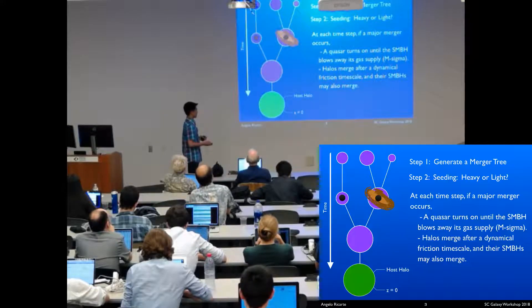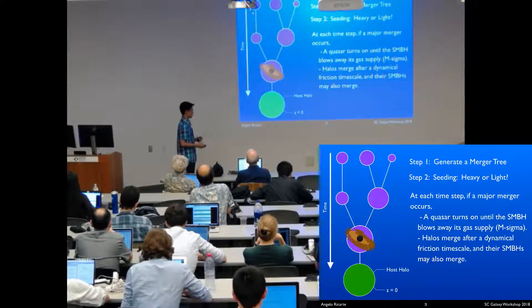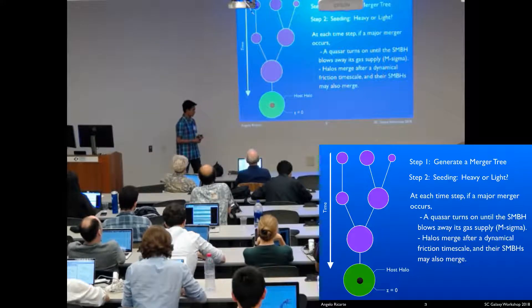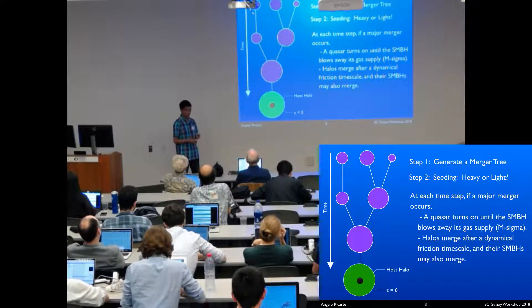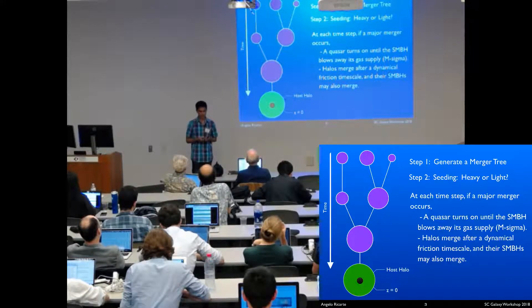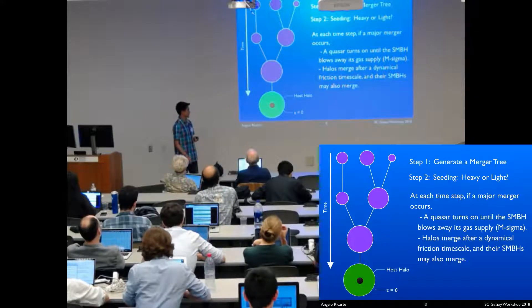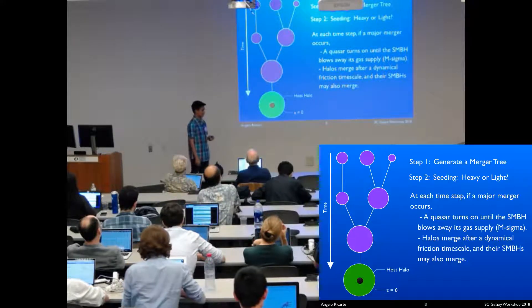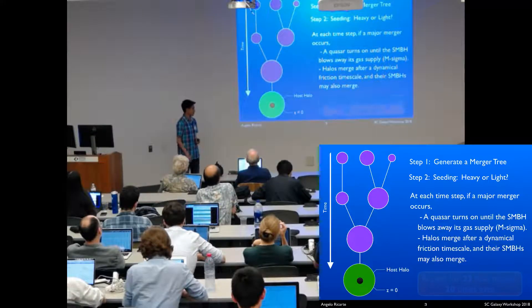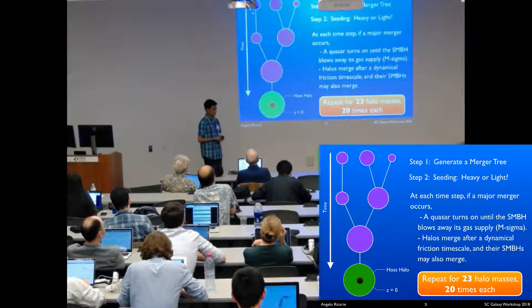The evolution of sigma as a function of halo mass and redshift is really important for getting luminosity functions correct as you go to higher redshift. Halos will merge after a dynamical friction timescale. Their supermassive black holes may also merge. You keep following this process until you get to redshift zero, saving any interesting properties you want to know about along the way, especially things like volumetric luminosity, Eddington ratios, black hole masses, et cetera. This was just for one realization of the assembly of this halo and only one halo mass, so we repeat this process for a variety of different halo masses a few times each to probe cosmic variance.